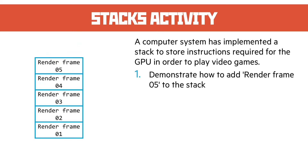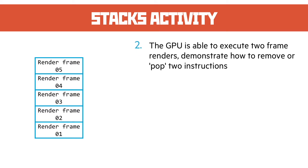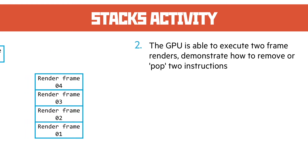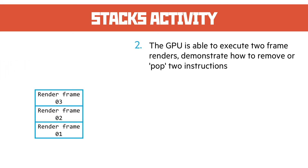Question 2: the GPU is able to execute two frame renders — demonstrate how to remove or pop two instructions. So the GPU would pop off the first item from the top of the stack, then pop off the second item which would also come off the top of the stack, leaving us with three items in the stack. That would move the pointers in both cases if we had to explain those.